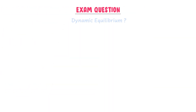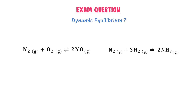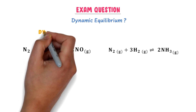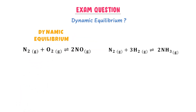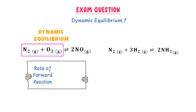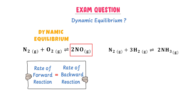Now let me teach you some exam questions. How can you explain that these reactions are in dynamic or chemical equilibrium? One mole of nitrogen gas plus one mole of oxygen gas react together to form two moles of nitrous oxide. Nitrous oxide will break down to form one mole of nitrogen gas plus one mole of oxygen gas. When we say this reaction is in dynamic equilibrium, it means that the rate at which nitrogen gas plus oxygen gas react to form nitrous oxide is equal to the breakdown rate of nitrous oxide to form oxygen gas plus nitrogen gas.